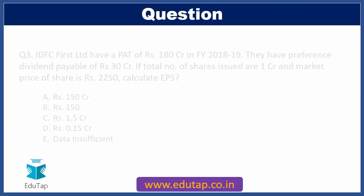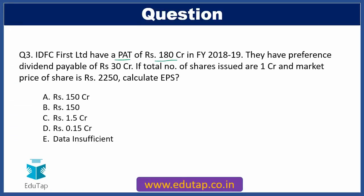As per our third question, IDFC First Limited has a PAT of Rs. 180 crore in financial year 2018-19 and a preference dividend payable of Rs. 30 crore. Total number of shares issued are 1 crore in quantity and the market price of share is Rs. 2250. We need to calculate the EPS. Options: A) Rs. 150 crore, B) Rs. 150, C) Rs. 1.5 crore, D) Rs. 0.15 crore, E) Data insufficient. PAT stands for profit after tax and EPS stands for earning per share. This question comes from the equity valuation model.